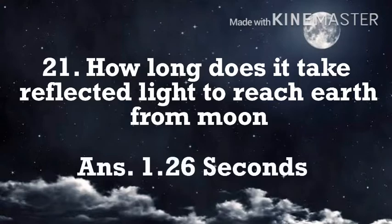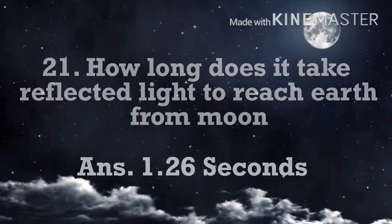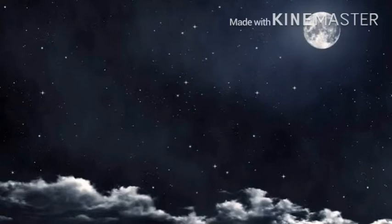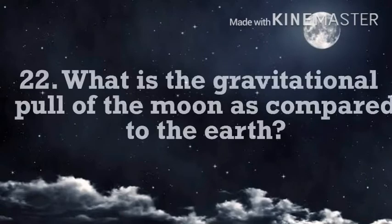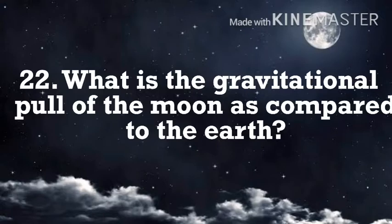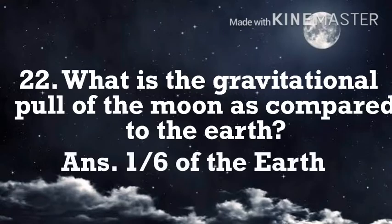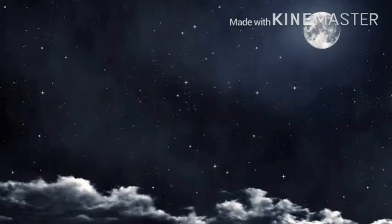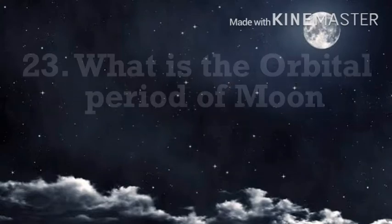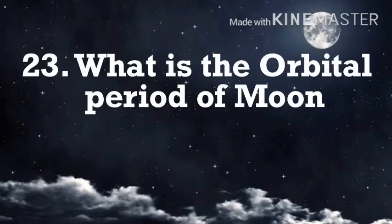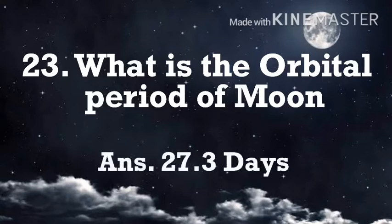How long does it take reflected light to reach the Earth from the moon? 1.26 seconds. What is the gravitational pull of the moon as compared to Earth? It is 1/6th of Earth. What is the orbital period of the moon? 27.3 days.